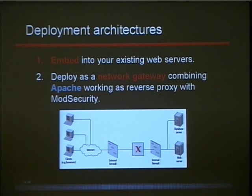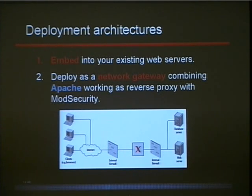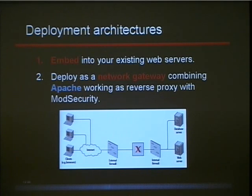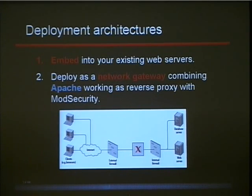The way it works, you can deploy it in two modes. You can take your existing Apache web server and just plug in ModSecurity into it. We're looking into expanding the web servers we work with, but at the moment it's only Apache. The other approach is to deploy it as a network gateway — you take the Apache web server, install it as a reverse proxy and add ModSecurity to it, giving you an open source web application firewall that works as a gateway.